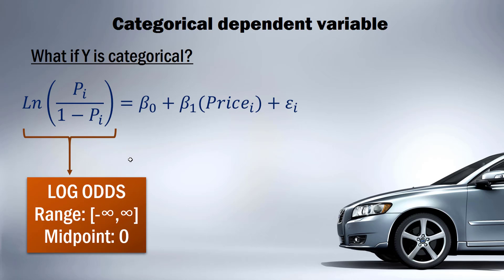So we take the log of the odds — the log odds — which is super convenient because the range now goes from negative infinity to positive infinity with a midpoint of zero. If the probability is 50%, we have 0.5 divided by 0.5 equal to 1, and the log of 1 is 0. We've converted something with a range of 0 to 1 into something with a range of negative infinity to positive infinity, which is symmetrical about zero and ensures the regression never produces out-of-range Y values.